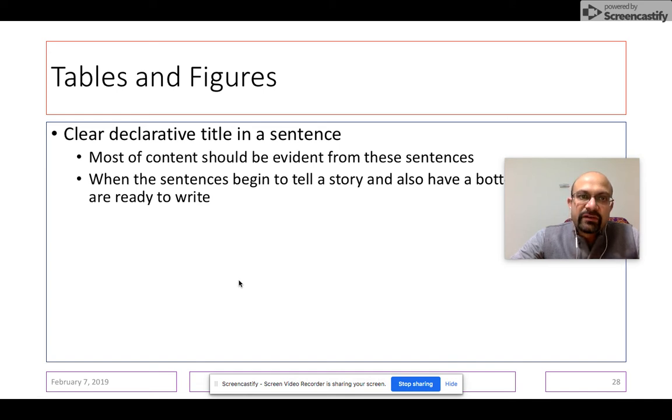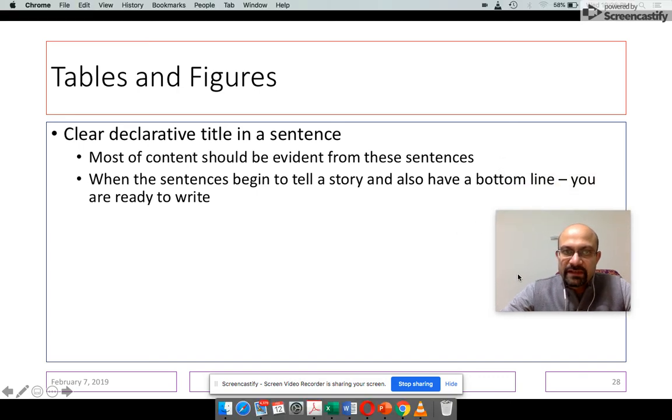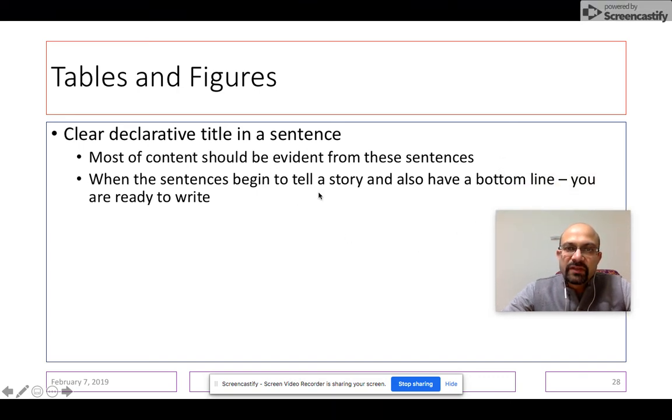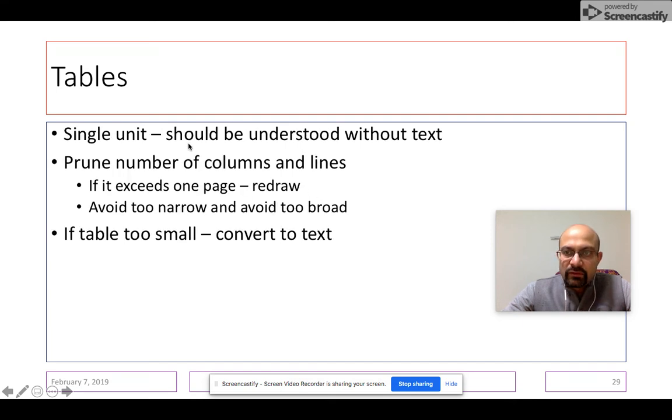Both tables and figures should have a clear declarative title which should be written in the form of a sentence. And most content should be evident from these sentences itself. Also, you should remember that the table is a single independent unit. It should be understood without the reader having to refer to the text of the article. So if somebody is reading your manuscript and comes across a particular table, they should be able to understand the table by reading the table itself and not requiring to go back to the manuscript.